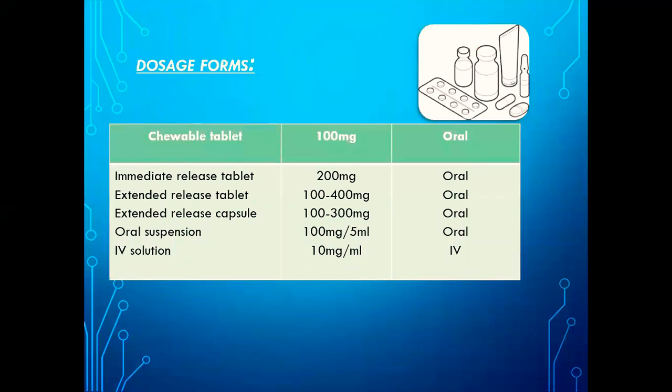Dosage forms: Carbamazepine could be present as an immediate release tablet, 200 mg given orally. Extended release tablet, 100 to 400 mg given orally. Extended release capsule, 100 to 300 mg given orally. Oral suspension, 100 mg per 5 ml given orally.